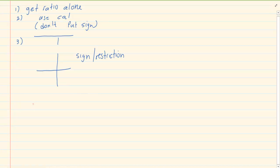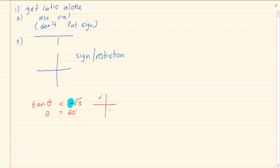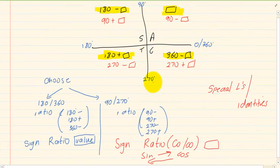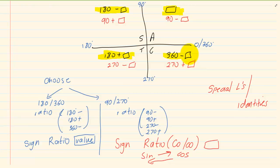Let us do a few examples. The general one you would have done from Grade 10 is where we have tan θ = -√3. You press shift tan √3 — remember, don't put the negative sign in your calculator — so we get θ = 60 degrees. Now tan is negative in the second and in the fourth quadrant. We use our Cartesian plane: second quadrant is 180 minus θ, third quadrant is 180 plus θ, fourth quadrant is 360 minus θ.